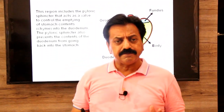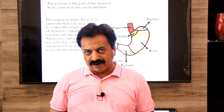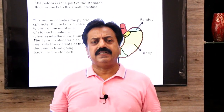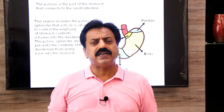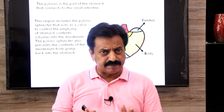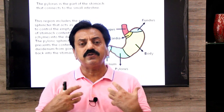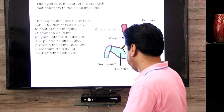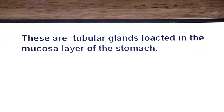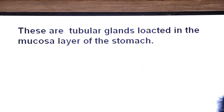We have reviewed the four parts: cardiac part, fundus, body, and pyloric part. In these parts we have glands. The gastric glands produce gastric juice into the stomach. These are tubular glands located in the mucosa layer of the stomach.